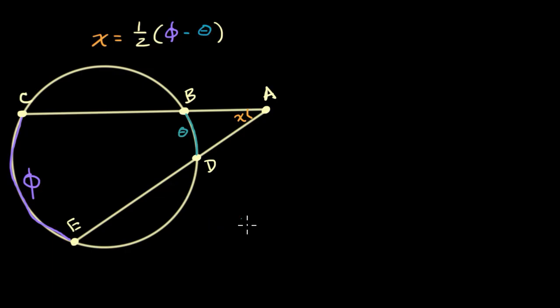And so one thing that we've seen multiple times is we know the relationship between an inscribed angle and the arc, the measure of the arc that it actually intersects. And we might be able to use that. So for example, if I were to draw a line here.